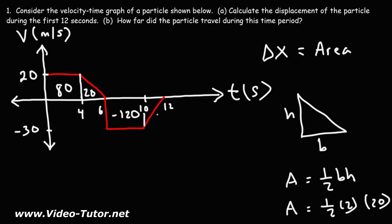To calculate the area of this triangle, we can redraw it. We have a base of 2, a height of negative 30. So 1/2 times 2, times negative 30, that's going to be negative 30.